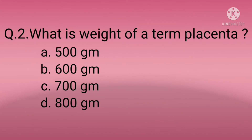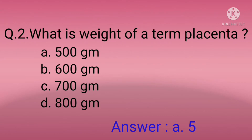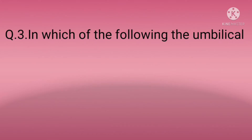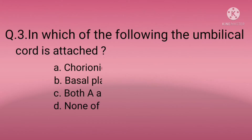Question two: What is the weight of a term placenta? Option A: 500 gram, Option B: 600 gram, Option C: 700 gram, Option D: 800 gram. The correct option is A — 500 gram. A term placenta weight is 500 gram.